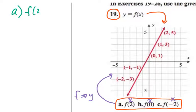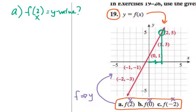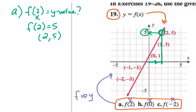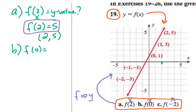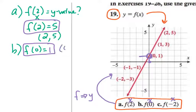For part a, I want to know what is f of 2 — meaning when x is 2, what is the y value? Looking at our graph along the x-axis: x is 1, x is 2. When x is 2, I go up to the graph and find the corresponding y value. That y value is 1, so we get the x, y point of (2, 1).